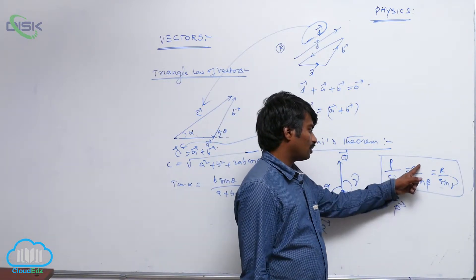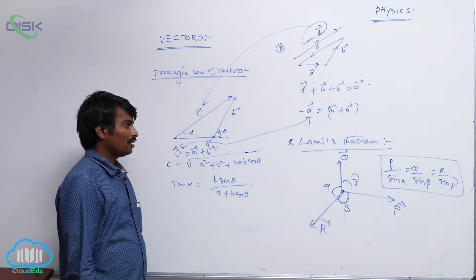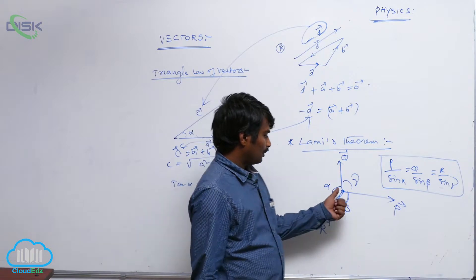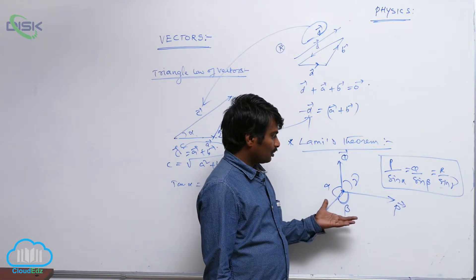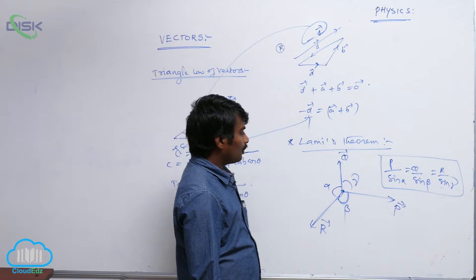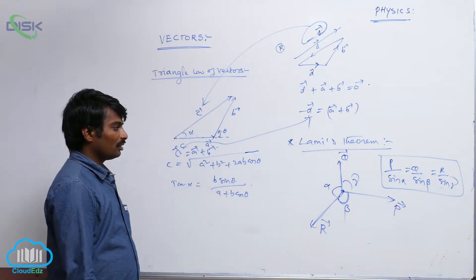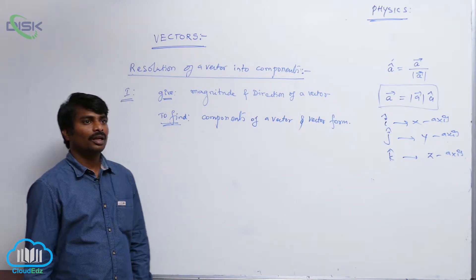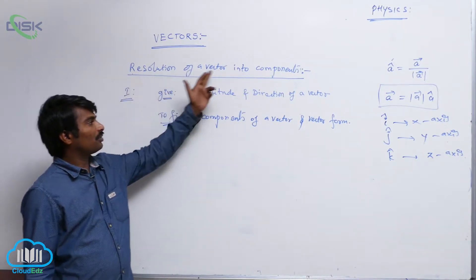The magnitude of p-vector divided by sinα equals q/sinβ equals r/sinγ. However, in most physics problems we will apply Lami's theorem in very few cases, because we typically have more than three forces acting on the body. When there are more than three forces, we cannot apply Lami's theorem. Instead, we resolve forces into components and set the resultant of components in each direction equal to zero.